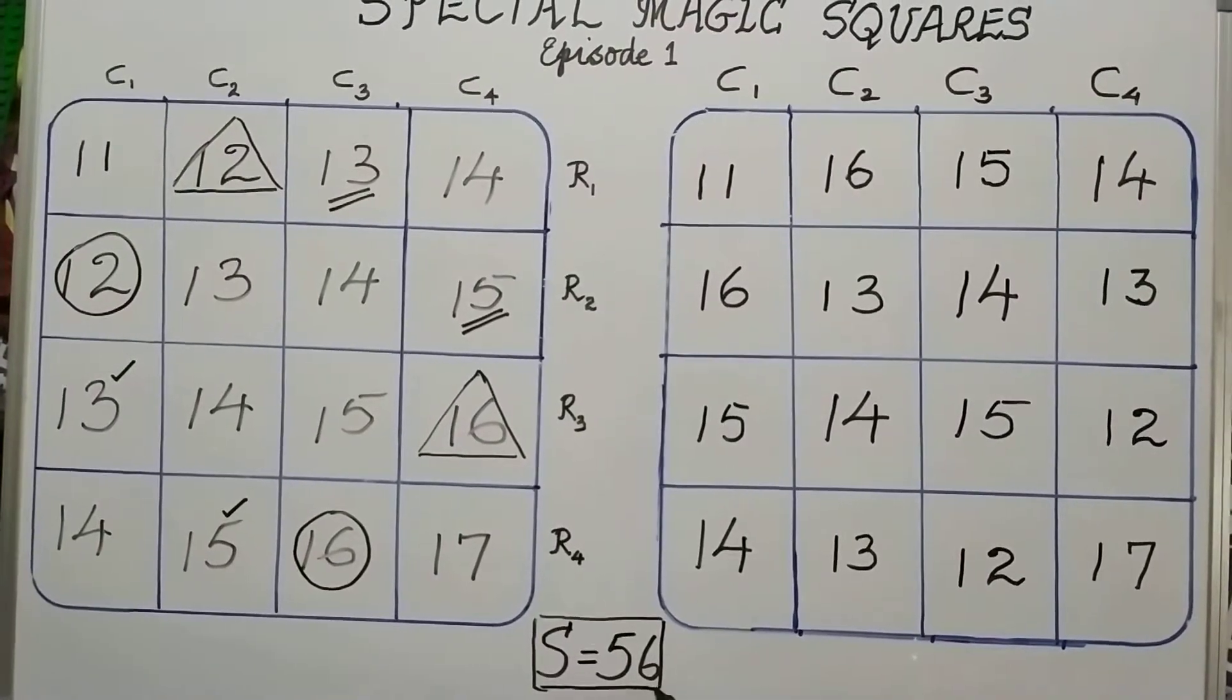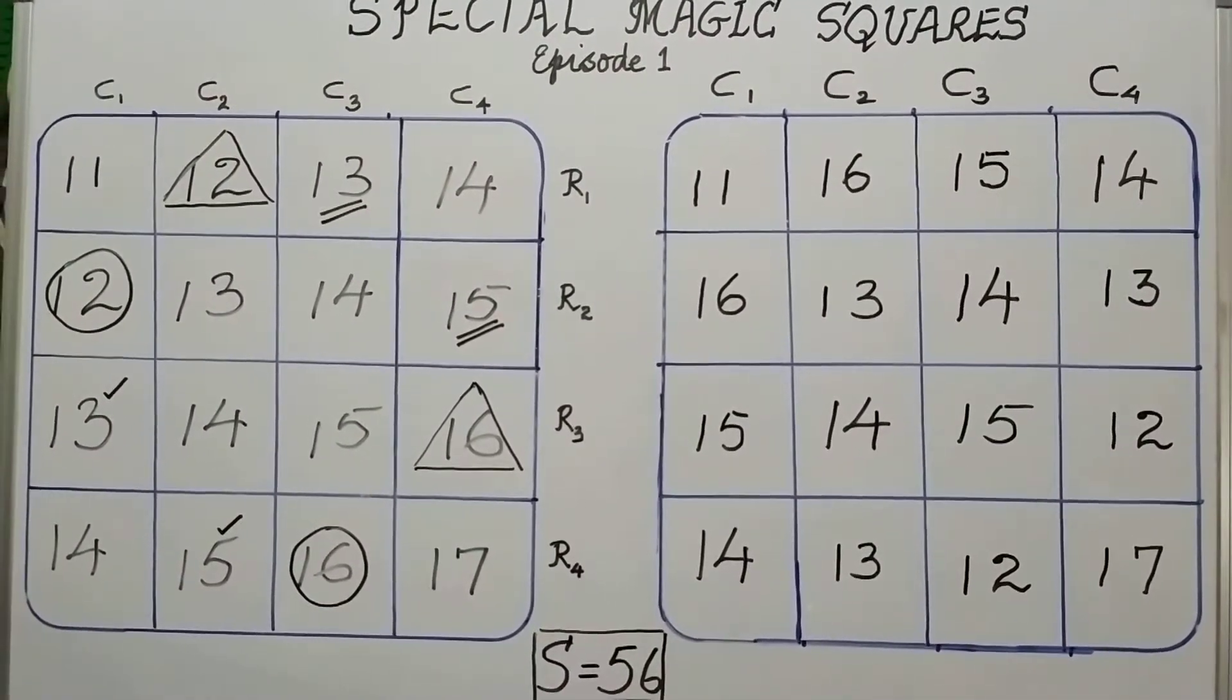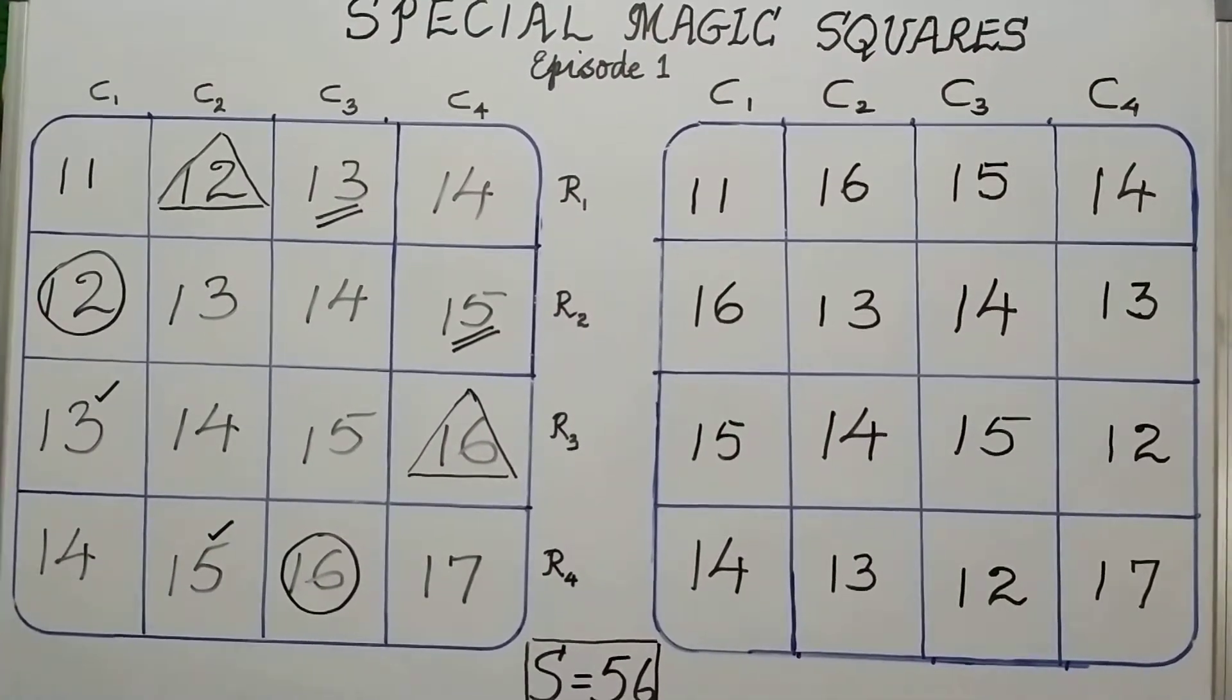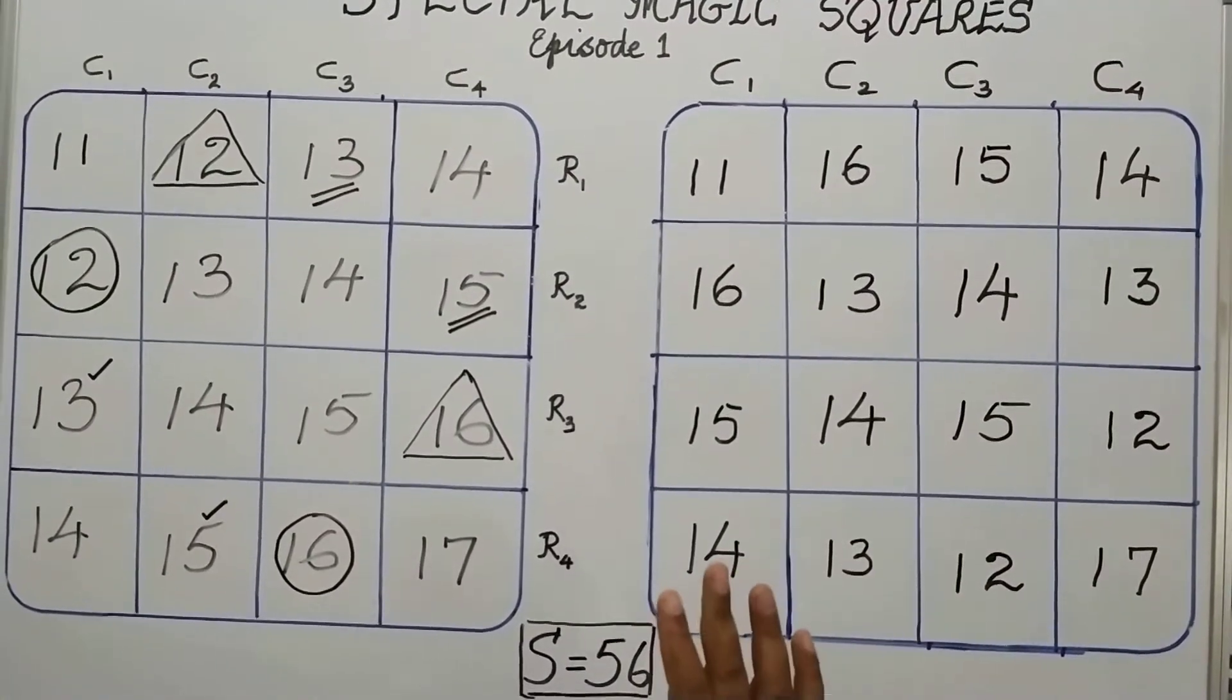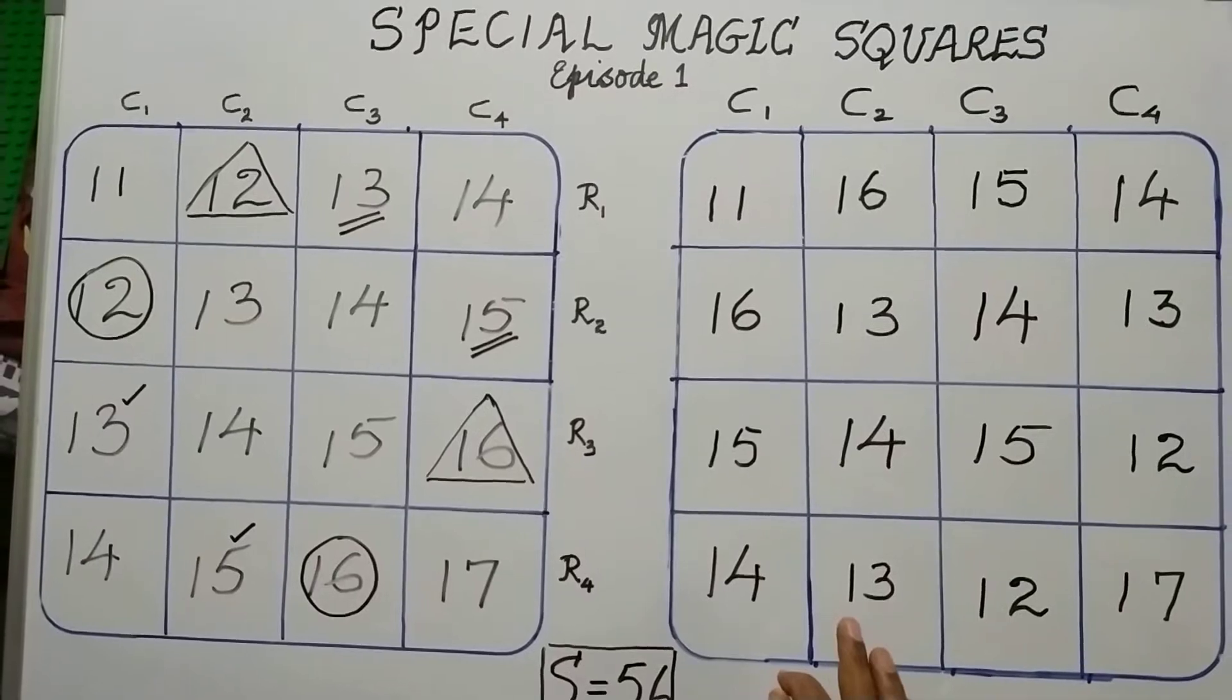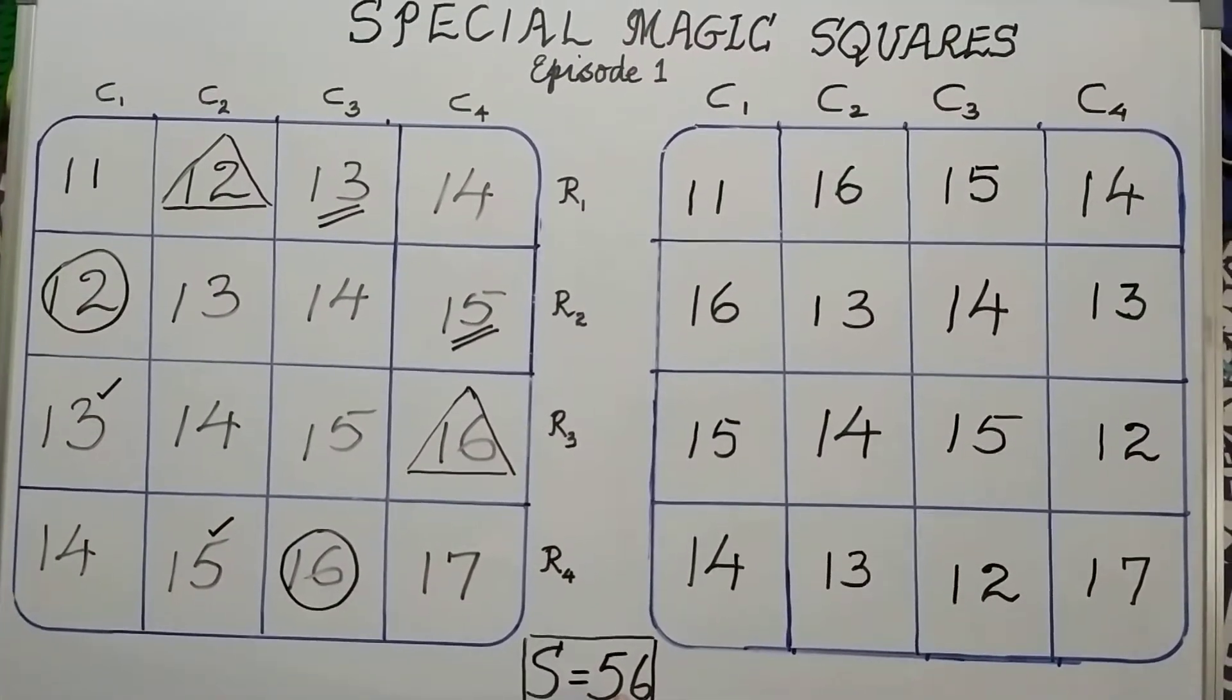And how did we get this 56? The average of all the 7 consecutive natural numbers that we took multiplied by the order of the magic square. This is a fourth order magic square, meaning it has 4 rows and 4 columns. So, we multiply the average that we get by 4, and the average that we got was 14. 14 into 4 is 56.